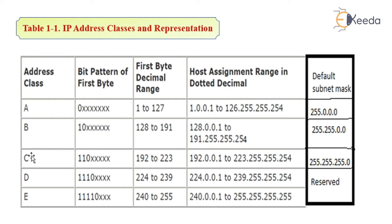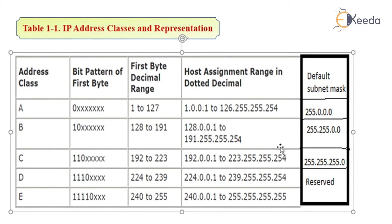Similarly, in class C the range of valid IP addresses is 192 to 223. So 192.0.0.1 to 223.255.255.254 is the range of class C addresses, while the subnet mask is 255.255.255.0.